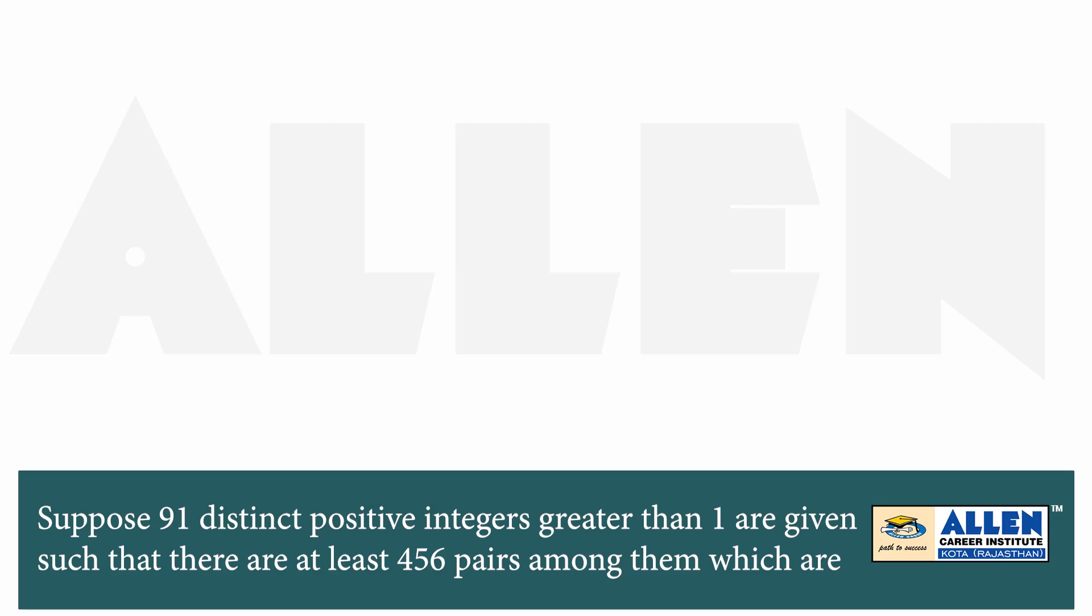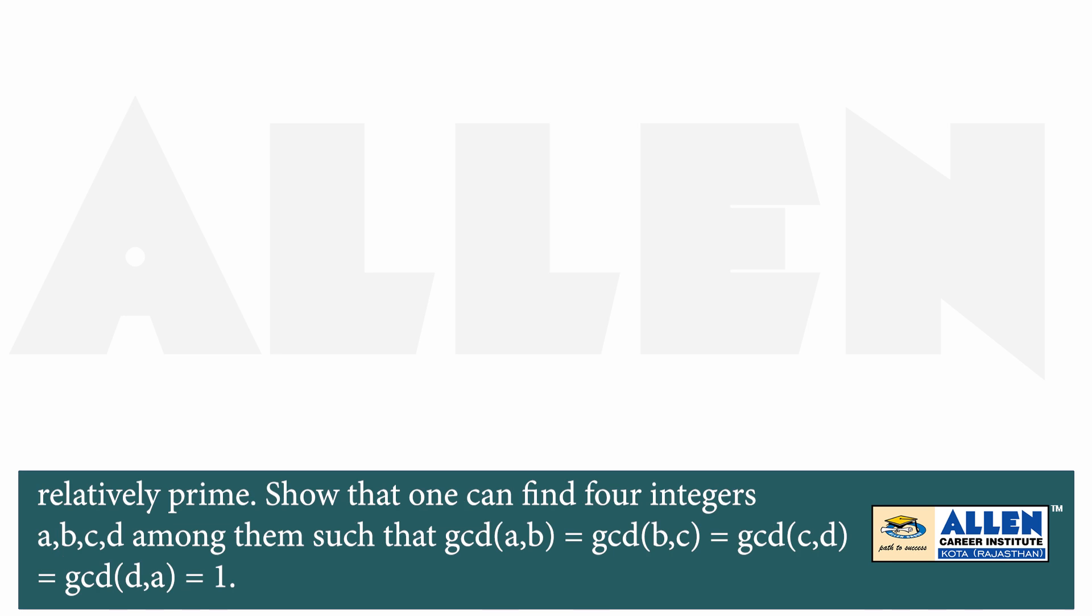Suppose 91 distinct positive integers greater than 1 are given, with 456 pairs of co-prime pairs. We need to find 4 integers A, B, C, D.